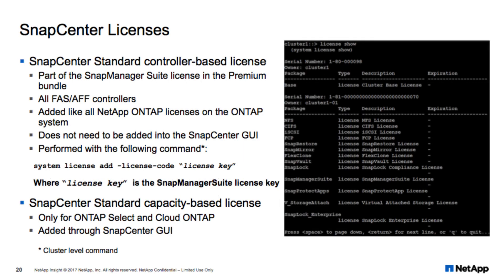SnapCenter licensing is actually pretty simple — there are only two types. If you have an All-Flash FAS or FAS, you install a controller-based license called SnapManager Suite, which is in the premium bundle. Instructions for installing controller-based licenses may be found in the ONTAP documentation on the NetApp support site. No other steps are necessary — nothing needs to be done on the SnapCenter server other than start creating storage connections. If you're going to use Cloud ONTAP or ONTAP Select, then you will need a SnapCenter server capacity-based license. In this case, no SnapCenter licensing will be done on the controller itself.